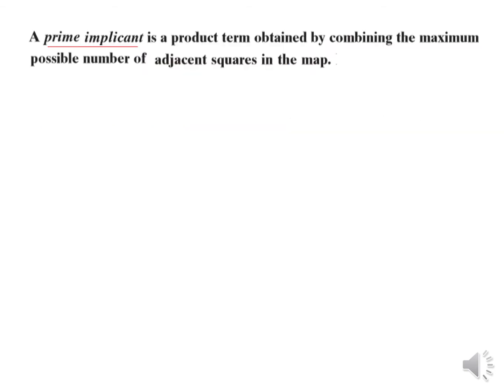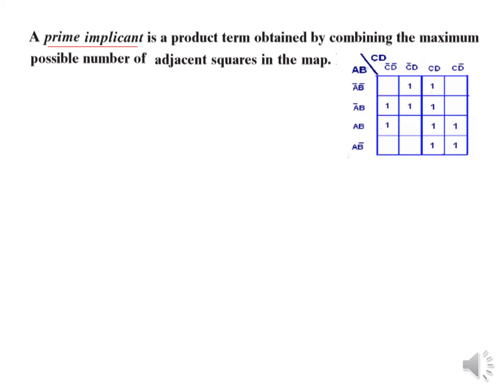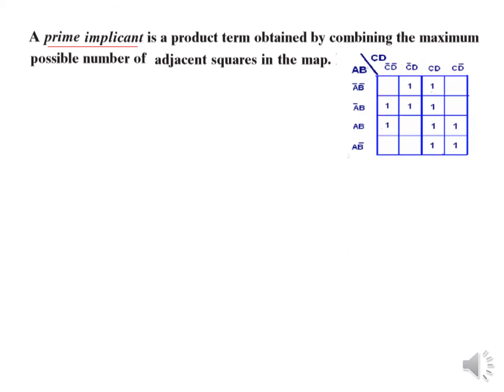Prime implicant. Now what is a prime implicant? It is a product term obtained by combining the maximum possible number of adjacent squares in a map. So if we have a map with these values, we have to combine the maximum possible numbers.